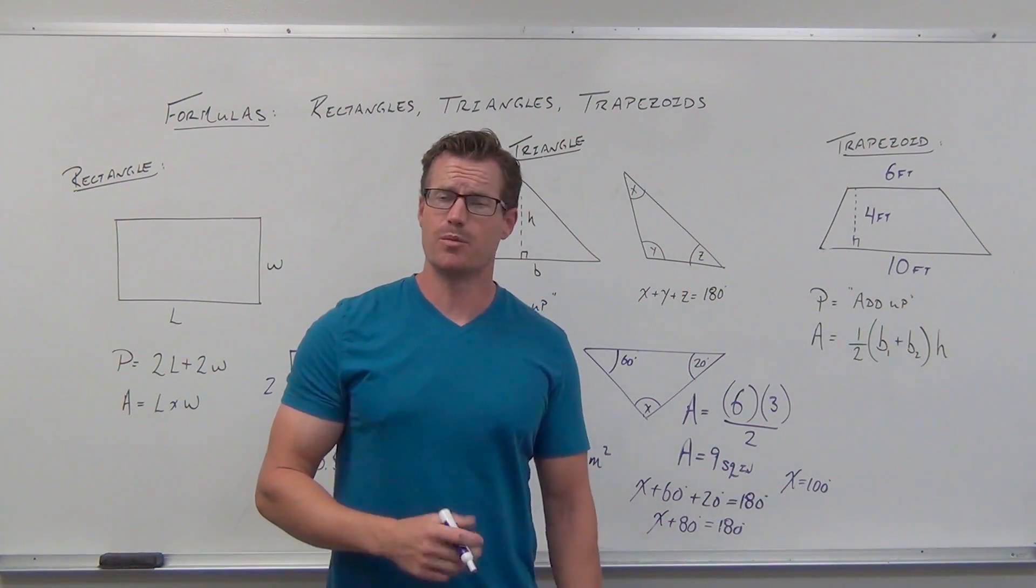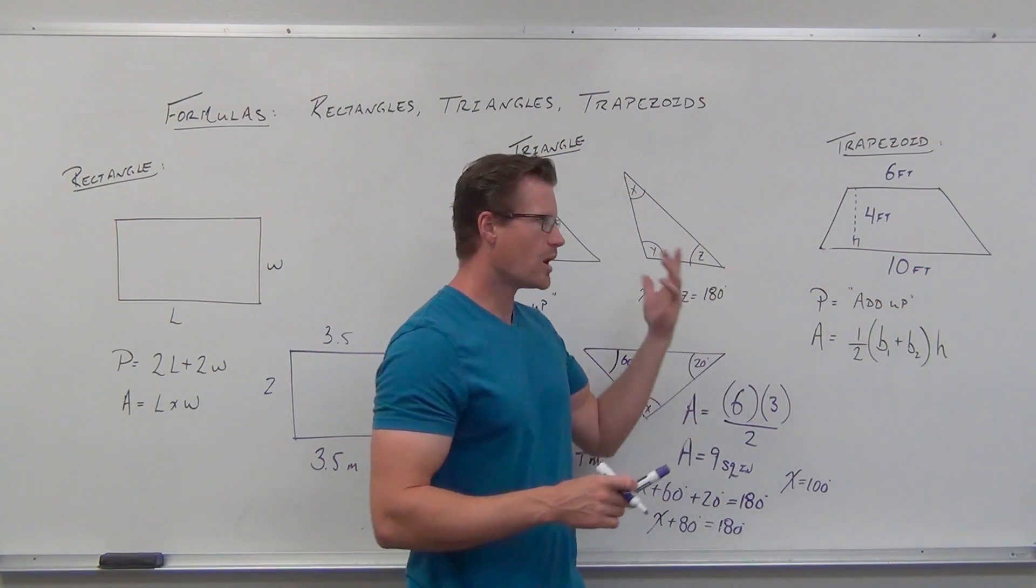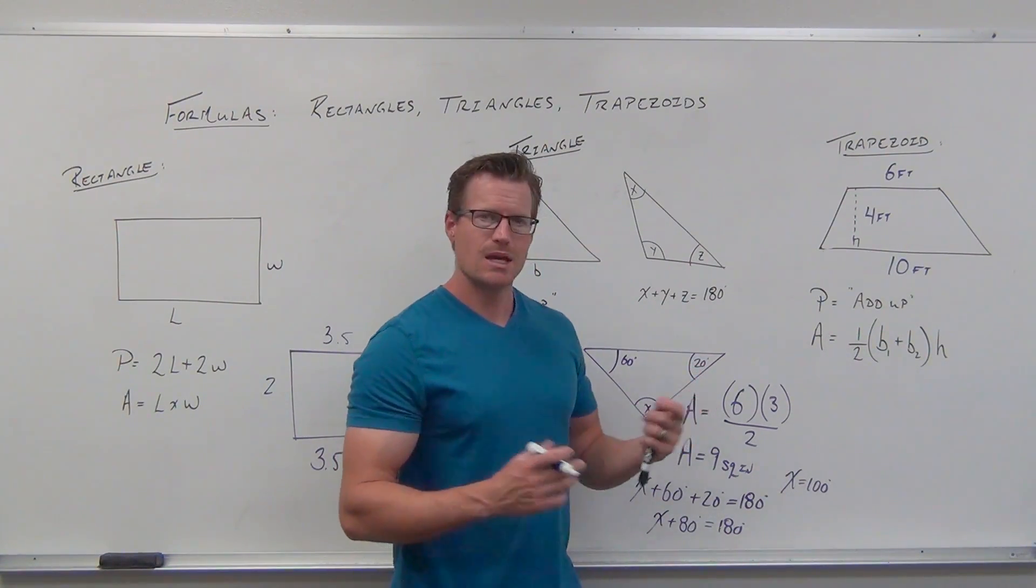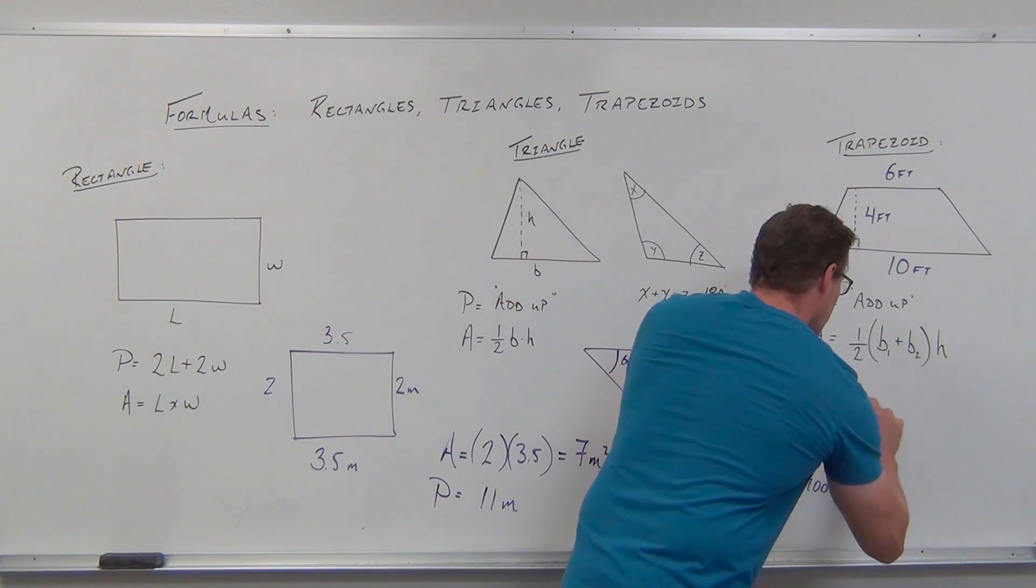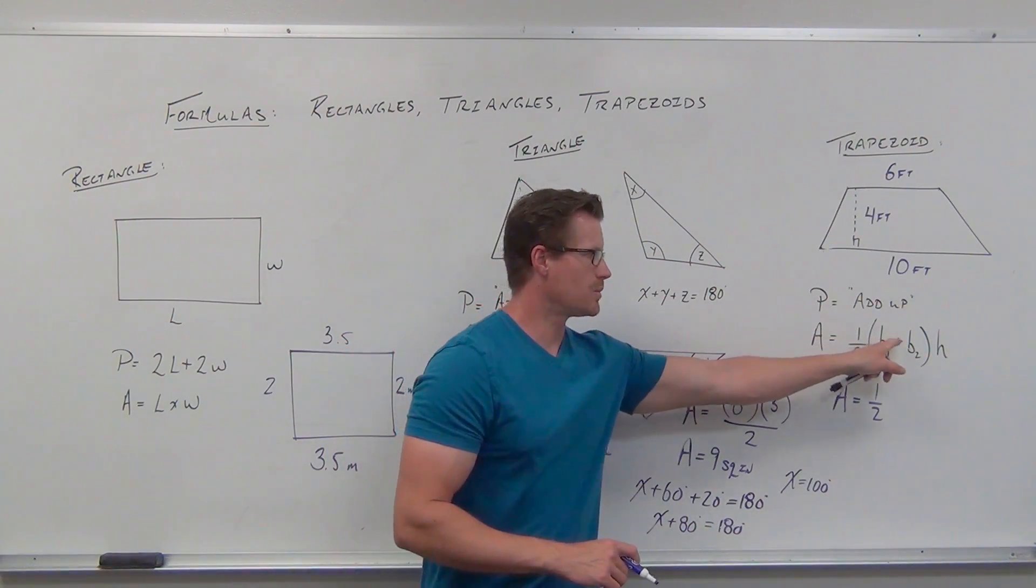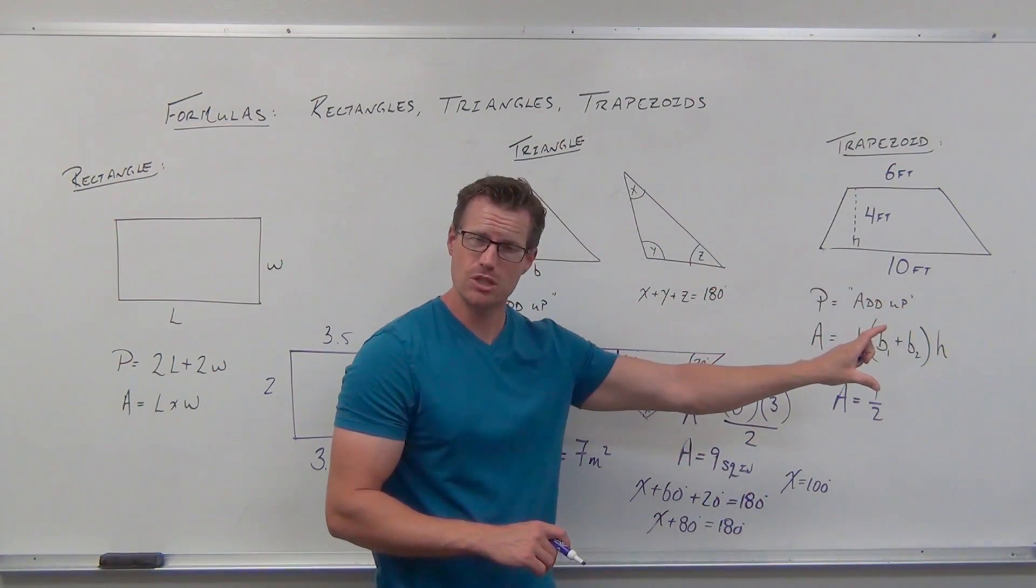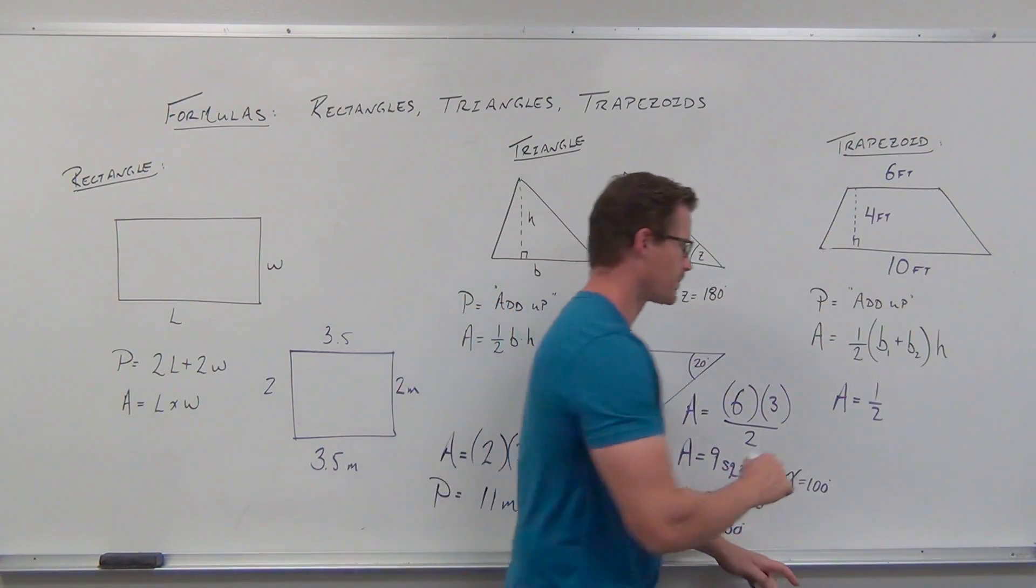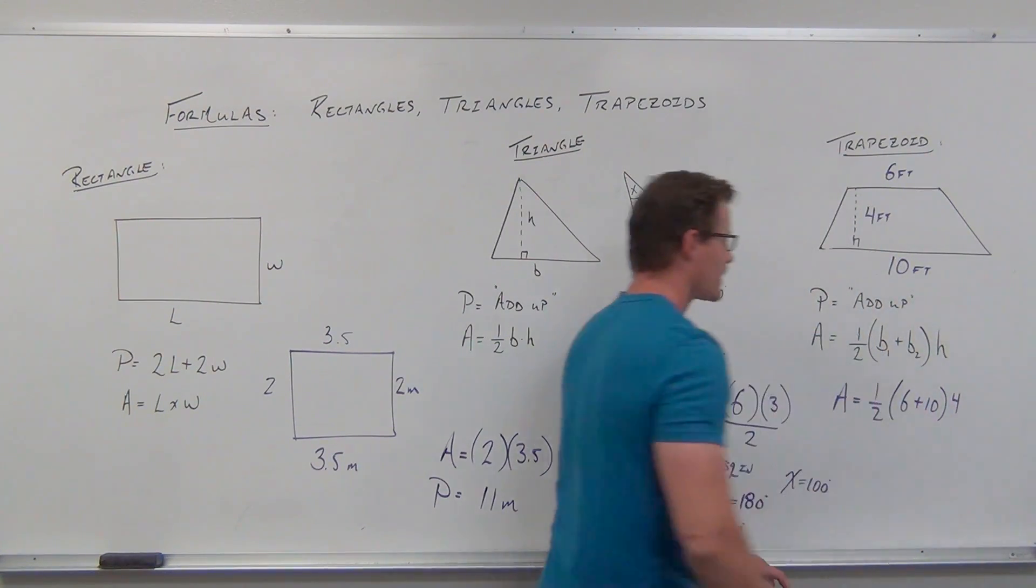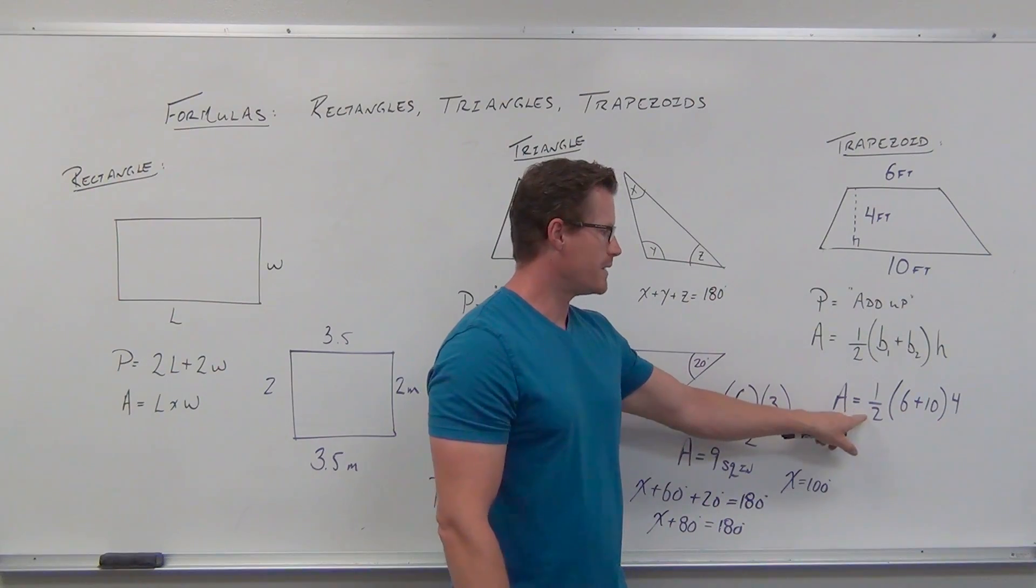Again, it's hard to figure out perimeter without all sides, but we can find area. Try it yourself. Base 2 is 10 feet, base 1 is 6 feet, height is 4 feet. Let's fill out the formula: (b₁ + b₂)h/2. You can write it as 1/2 times the amount, or divide the amount by 2 - same result. Base 1 is 6, base 2 is 10, height is 4.